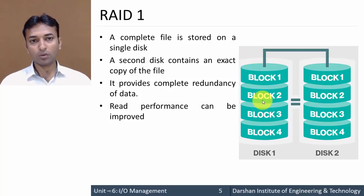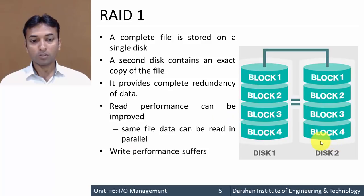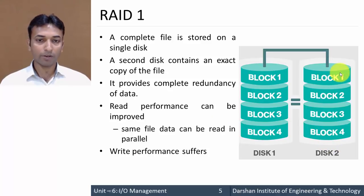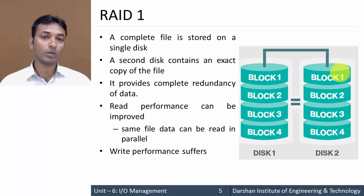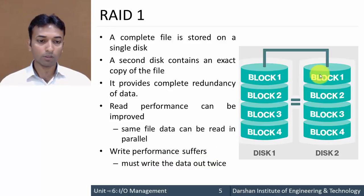Read performance can be improved because you can read from any drive since the data is the same — the same file data can be read in parallel. However, write performance suffers because if you write to one block, that block must be updated on both drives at the same time. You need to perform the write operation twice because of the carbon copy.